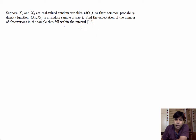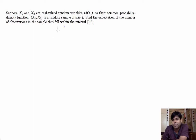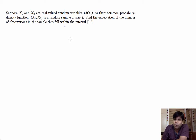And if none of them falls in the interval 0 to 3, then the number of observations in the sample that falls in the interval takes value 0. So we want to find the expected number of observations that falls in the interval.